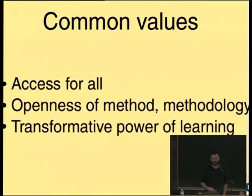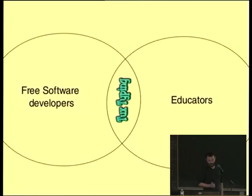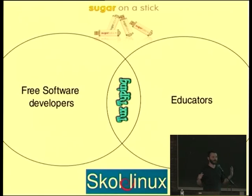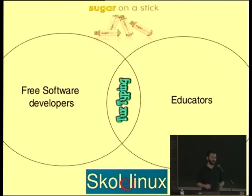It's confusing then that there isn't more of an overlap. But it turns out that the extent of this overlap is basically Tux Type. If you've learned how to type using it, you know what it is. We have a couple of other related projects like Sugar on a Stick and Skoll Linux, which are basically just free software environments to be used in school. But there's very little besides basically us and Tux Type that's focused on directly teaching content or making it possible to directly teach content.